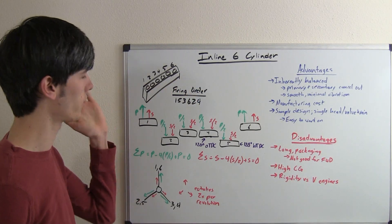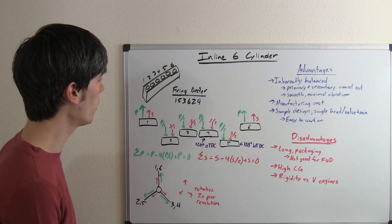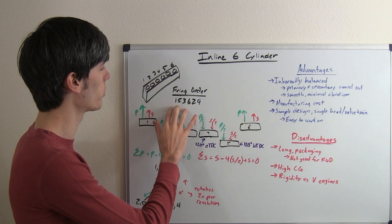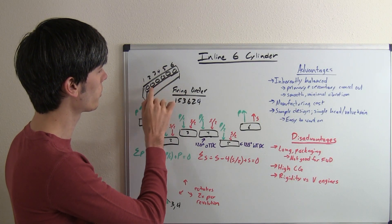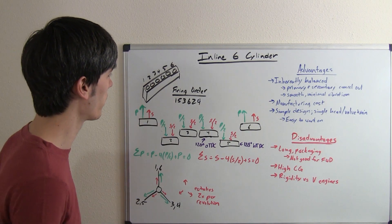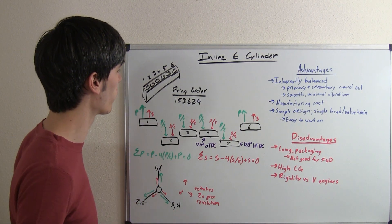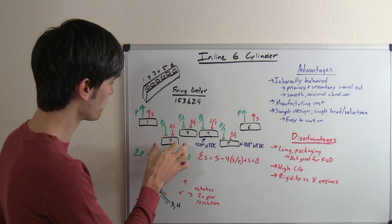So here we've got our inline six. It's just six cylinders all in a row. The firing order, a typical one would be one, five, three, six, two, four. And that's balanced so that you're going to be firing every 120 degrees.